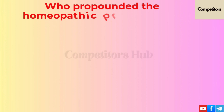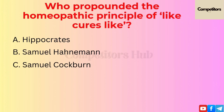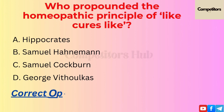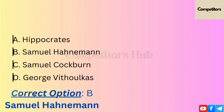The next question is: who propounded the homeopathic principle of 'like cures like'? Option A: Hippocrates. Option B: Samuel Hahnemann. Option C: Samuel Cockburn. Option D: George Vithoulkas. The correct option is B, Samuel Hahnemann.